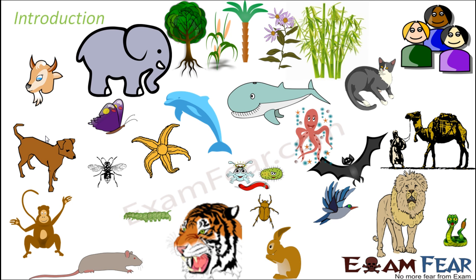If you look at all of them and try to compare any two, you actually see that there are a lot of differences between them. For example, if you try to compare a human being with a fish, do you find a lot of similarities? Not really. There are a lot of differences between these two varieties of living organisms. All these living organisms which you see on the screen are very much different from each other.